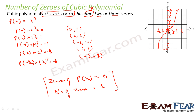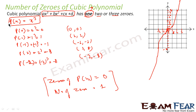This graph is going up and will not come back — if you keep plotting, it continues in both directions without crossing the x-axis again. So this polynomial px = x³ has only one zero. I have just taken this polynomial function px equal to x³, plotted the points, and found that this polynomial function has only one zero.